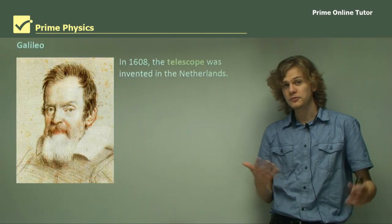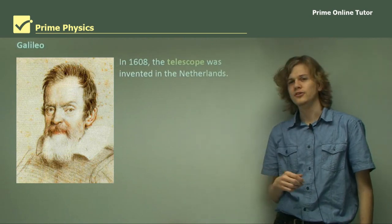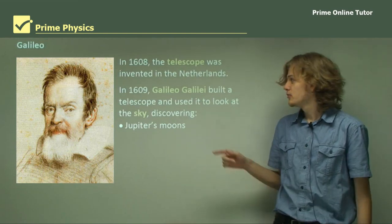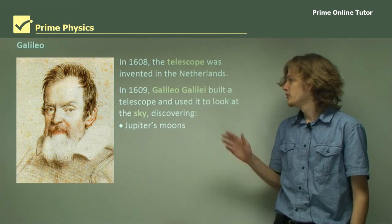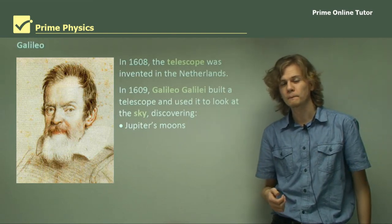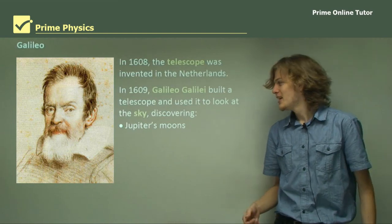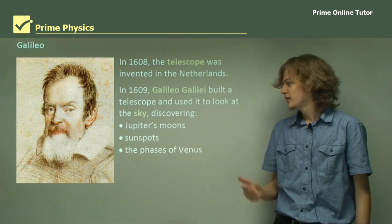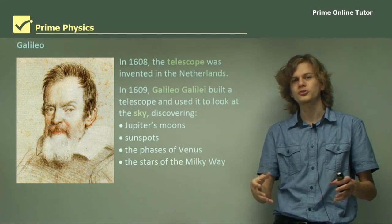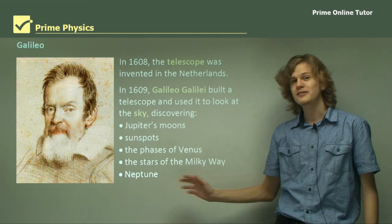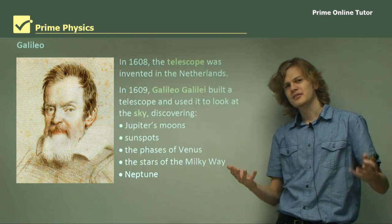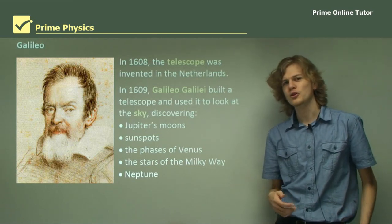In 1608, about 50 years later, the telescope was invented in the Netherlands. In 1609, just a year later, Galileo Galilei built a telescope and used it to look at the sky — he was probably one of the first people ever to do so. With this simple act, he managed to discover Jupiter's moons, sunspots, the phases of Venus, the stars of the Milky Way — which used to be thought of as just one big globby thing — and in fact Neptune, although he didn't realize it at the time. A few of these discoveries went contrary to the geocentric model of the universe accepted at the time.